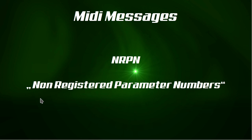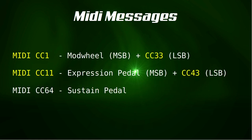In total there are 128 MIDI CC messages. As an example, a few MIDI CC RPNs defined by the MIDI Association are: MIDI CC 1 is the mod wheel, and if you need finer steps there is MIDI CC 33 as an LSB — this is the most significant byte and that is the least significant byte. Or for example MIDI CC 11 for expression pedals, with MIDI CC 43 as its LSB, or MIDI CC 64 for the sustain pedal.